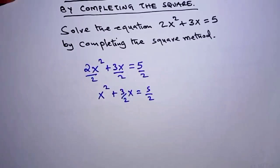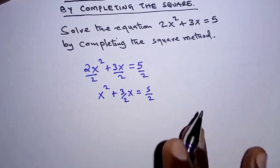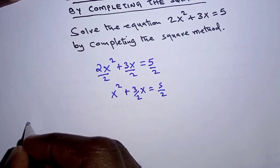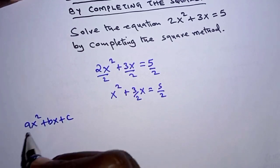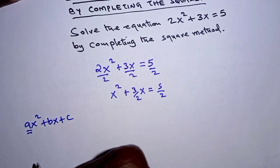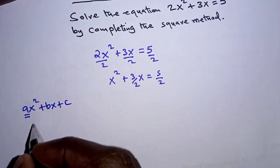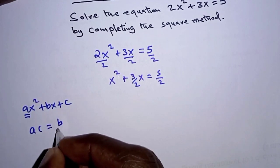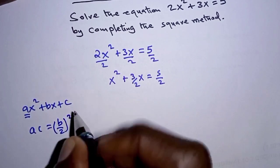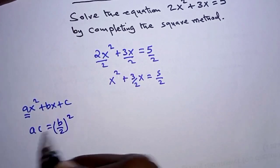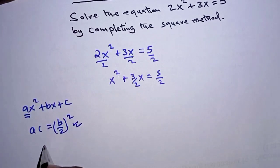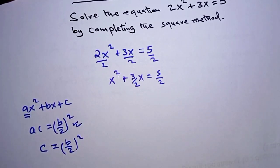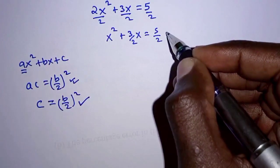The next thing is to complete the square on the left hand side. If you have a quadratic expression ax squared plus bx plus c such that the coefficient of x squared is 1, that is a is 1, then the relation is c equals b over 2 squared. Since a is 1 in our equation, c becomes b over 2 squared.